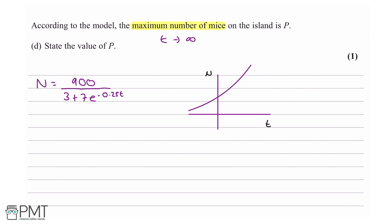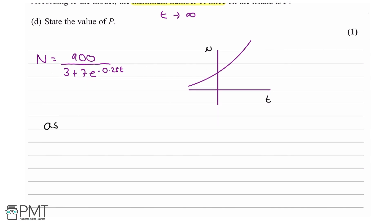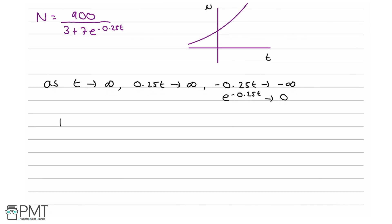As T approaches infinity, 0.25T also approaches infinity, so minus 0.25T approaches minus infinity, and e to the minus 0.25T approaches 0 (since it becomes 1 over a very large number). Therefore P equals 900 over (3 plus 7 times 0), which is 900 over 3, which equals 300.